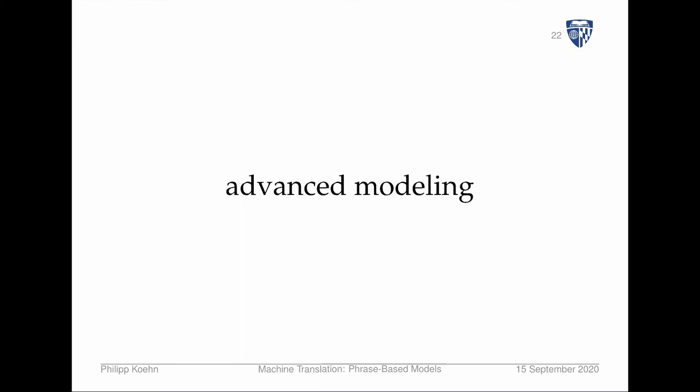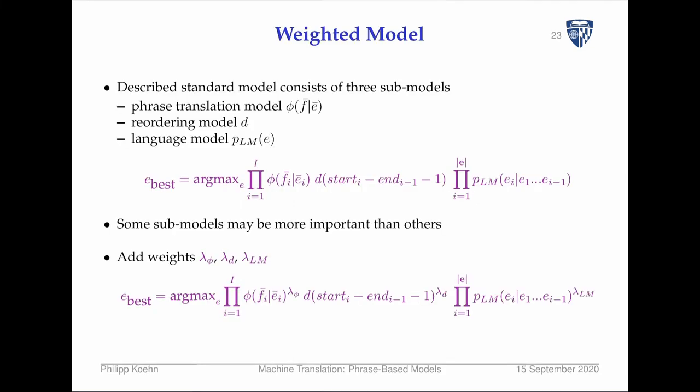So that's the basic model. Next, we go over some of the more advanced modeling choices that were made. The first change is the idea of a weighted model. The standard model I introduced consists of three sub-models: phrase translation probabilities, a reordering model, and a language model.